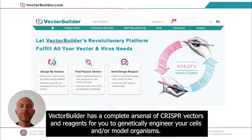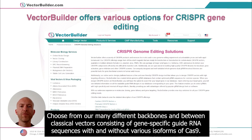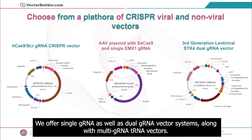VectorBuilder has a complete arsenal of CRISPR vectors and reagents for you to genetically engineer your cells and/or model organisms. Choose from our many different backbones and between classical vectors consisting of gene-specific guide RNA sequences with and without various isoforms of Cas9. We offer single-gRNA as well as dual-gRNA vector systems, along with multi-gRNA tRNA vectors.